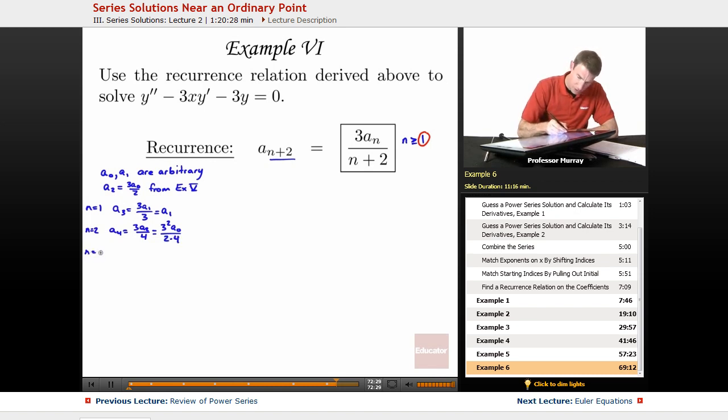From n equals 3, I get A5 equals 3A3 over 5, which in terms of A1 is 3A1 over 5. That's coming from up here when we figured out A3 in terms of A1.